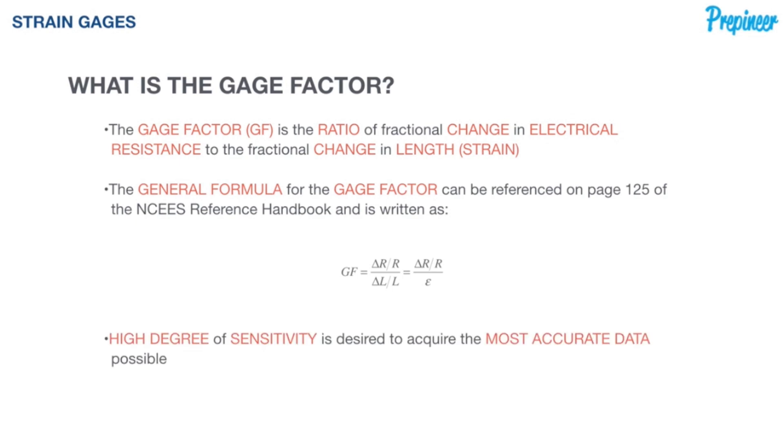In application of strain gauges, a high degree of sensitivity is desired to acquire the most accurate data possible. A high gauge factor will indicate a relatively large resistance change for a given strain. Where if it's a lower gauge factor, it's not as sensitive. So we definitely want a high degree of sensitivity, and that's what the gauge factor is going to tell us.